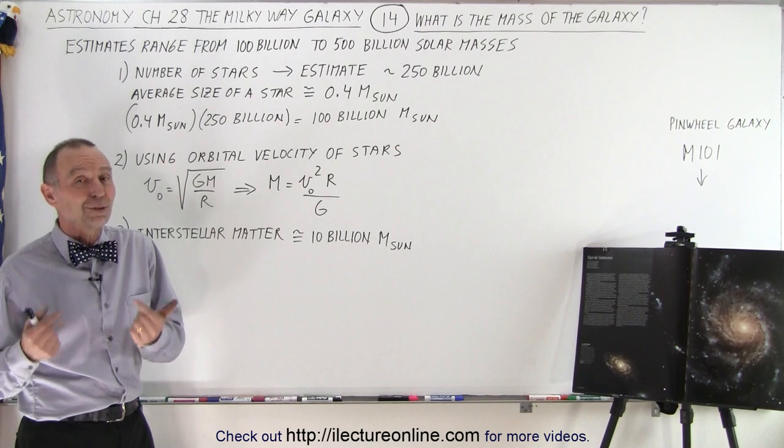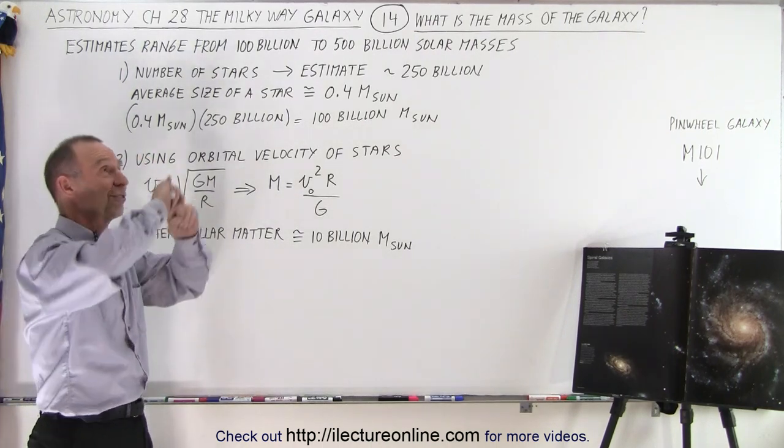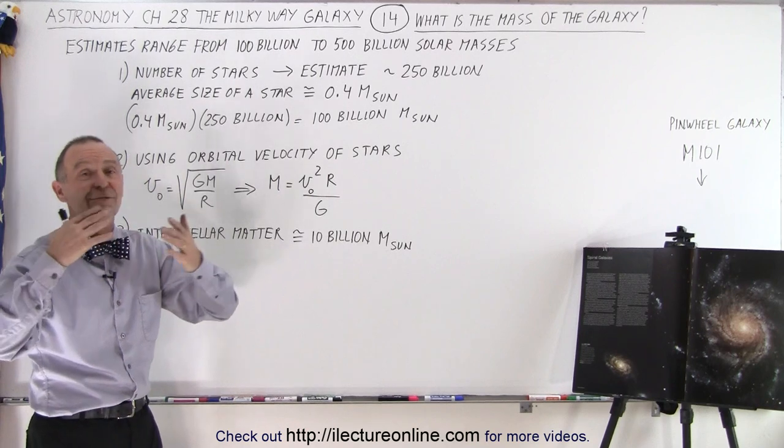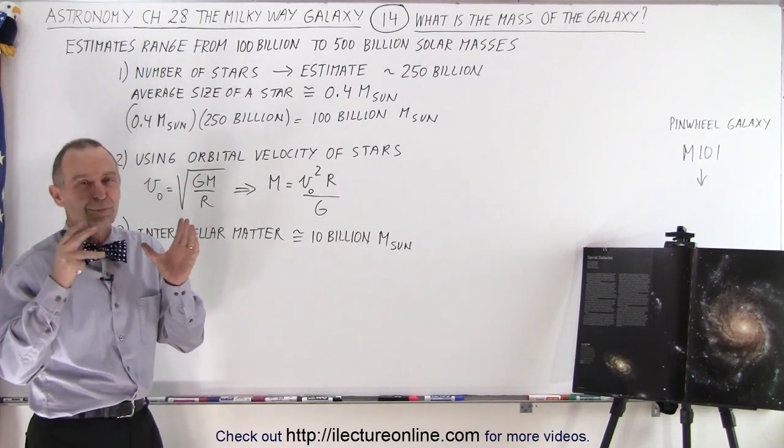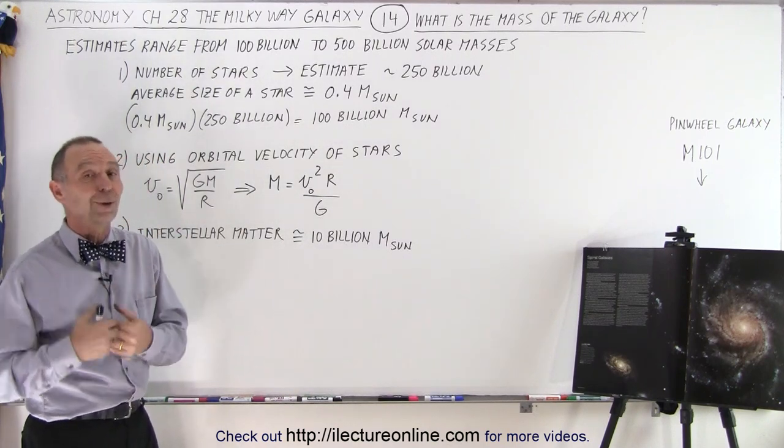As you can tell, it's a lot more difficult to figure out the mass of our own galaxy than to figure out the mass of galaxies around us, which we can see and photograph and estimate much better because we have much better vantage points on what those galaxies look like than our own.